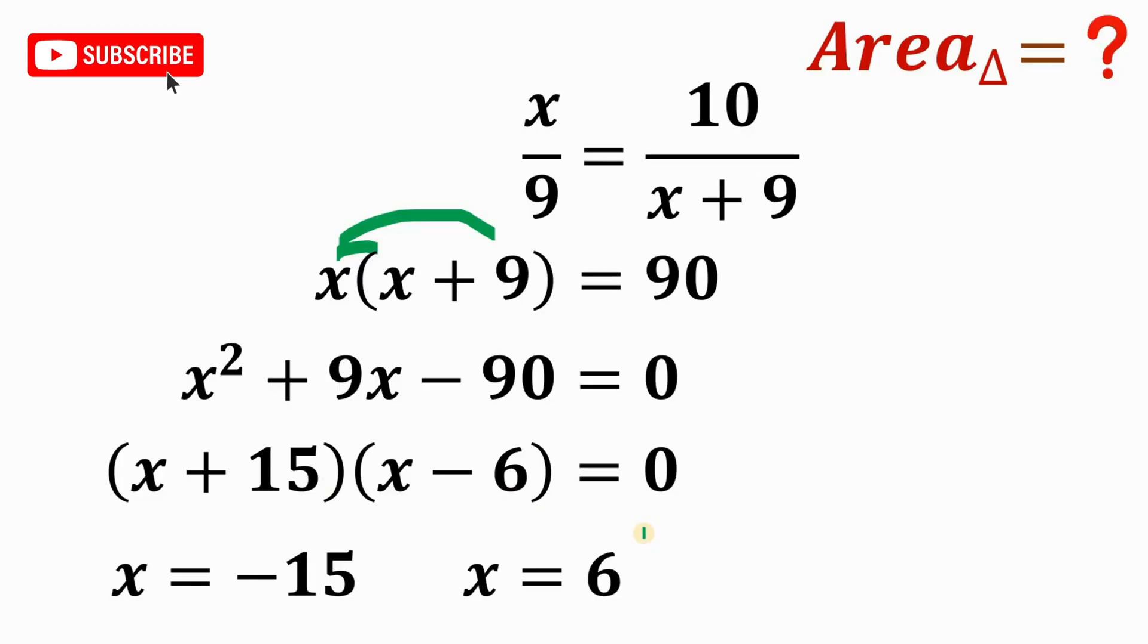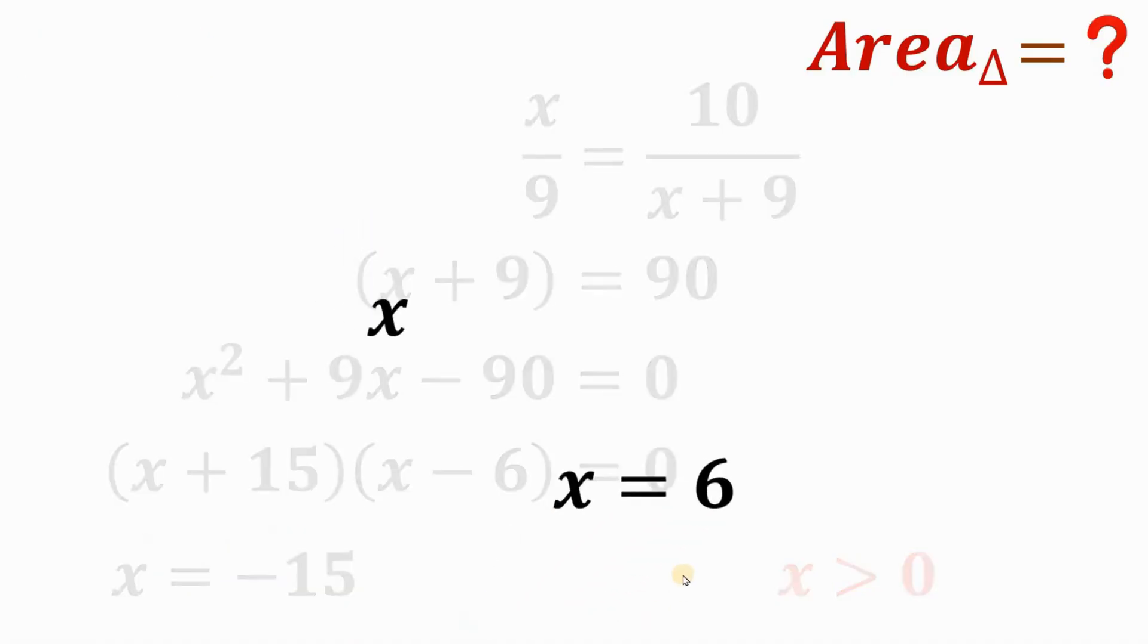Now, don't forget, X is area. Therefore, the area of this triangle, of that triangle, is greater than 0. Therefore, we eliminate this value negative 15. So we get that X equals positive 6.